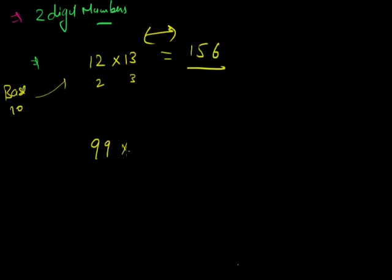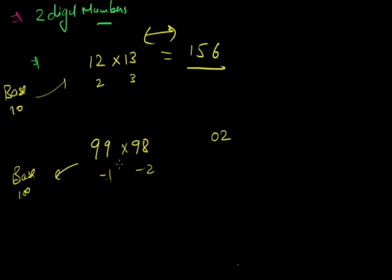Let's try 99 times 98. The base is 100, so we use 2-digit results. 99 is minus 1 from 100 and 98 is minus 2 from 100. Minus 1 times minus 2 is 02. Then 99 minus 2 (or 98 minus 1) gives 97. So 99 times 98 equals 9702.